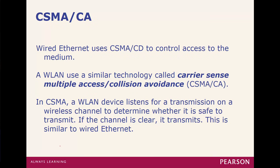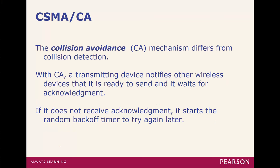The mechanism that controls access to Wi-Fi is CSMA/CA — collision avoidance — which is different from Ethernet's CSMA/CD, collision detection. In CSMA/CA, a wireless device listens for a transmission on a wireless channel to determine whether it's safe to transmit; if the channel is clear, it transmits. With collision avoidance, a transmitting device notices other wireless devices ready to send and waits for acknowledgments. If it does not receive an acknowledgment, it starts a random back-off timer and tries again.